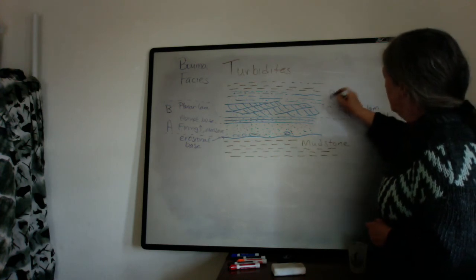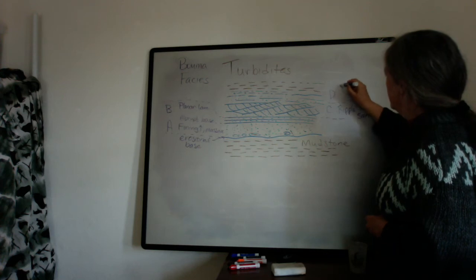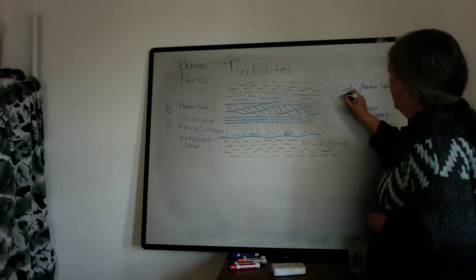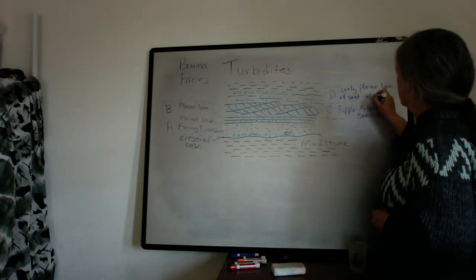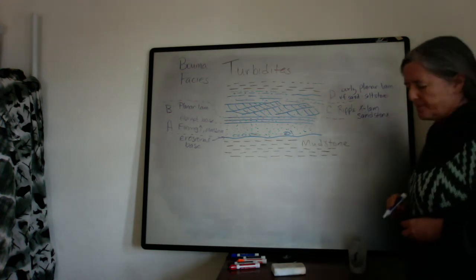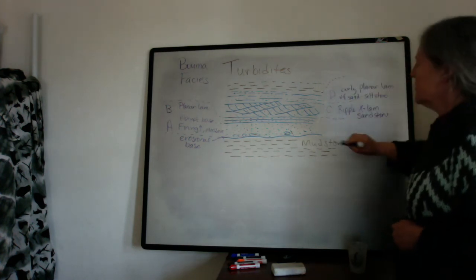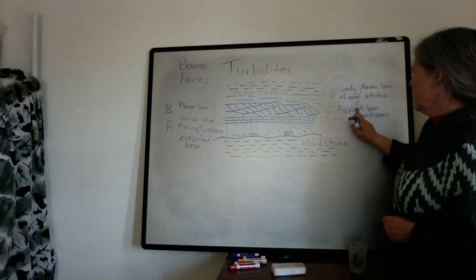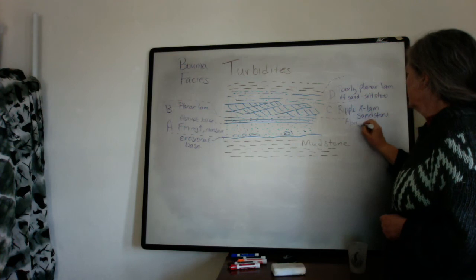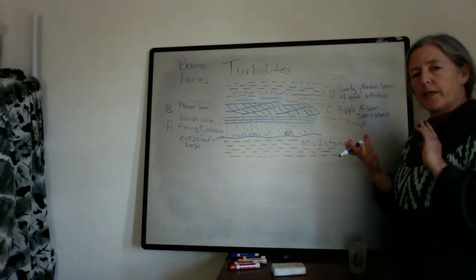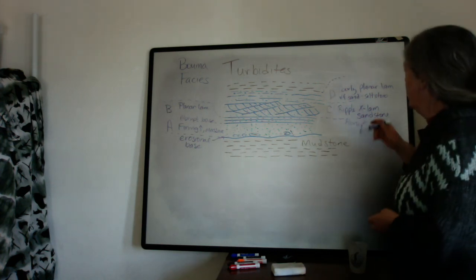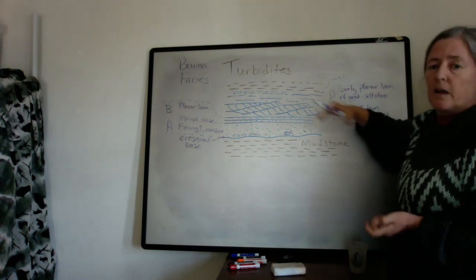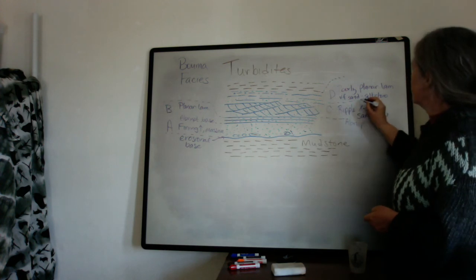Above that is D, which is usually this poorly laminated, planar laminated, very fine sand to siltstone. The boundary between C and D can be either sharp or gradational. There's a big distinction between upper planar lamination and ripple cross lamination in terms of bed form dynamics. Going into this poorly planar laminated sandstone at very low flow speed, grain size is also decreasing, so you can get some ripples here — making this often a gradational boundary.